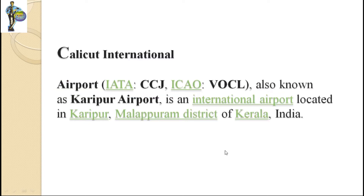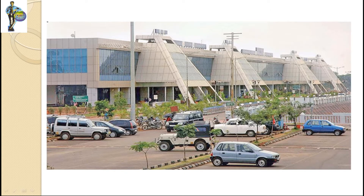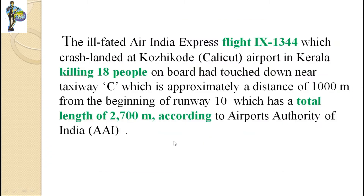The crash of Air India Express Flight 1344 occurred at Kozhikode International Airport. Kozhikode is also known as Karipur, and thus the Kozhikode International Airport is also known as the Karipur Airport. This is an international airport situated at Malappuram district of Kerala. This is the outer view of the Karipur Airport, where the ill-fated Air India Express Flight 1344 crash-landed.